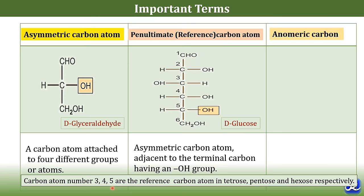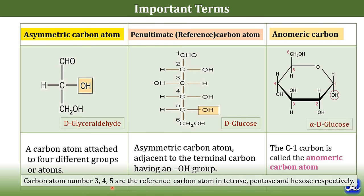What is anomeric carbon? The C1 carbon is called the anomeric carbon atom. For example, in this ring structure of glucose, the C1 carbon atom is the anomeric carbon atom, and the position of the hydroxyl group decides whether it is an alpha-anomer or beta-anomer. So these are the three important terms: asymmetric carbon atom, reference carbon atom, and anomeric carbon atom.